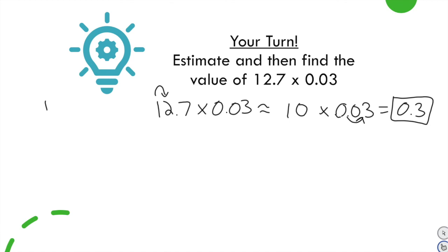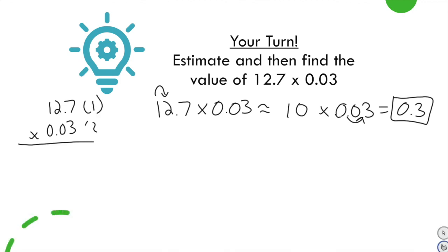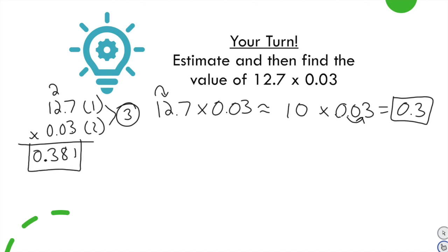Now solve 12 and 7 tenths times 3 hundredths for the exact answer. There's one decimal place here and two there — three total. 3 times 7 is 21, carry the 2. 3 times 2 is 6, plus 2 is 8. 3 times 1 is 3. Going to three decimal places, the answer is 0.381 — or you can add a leading zero — which is very close to our estimate of 3 tenths. So the answer seems reasonable.